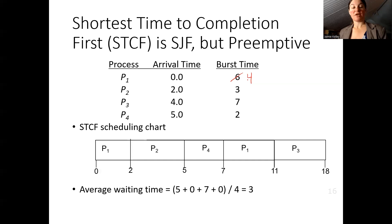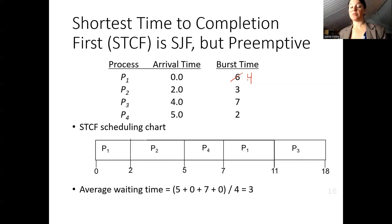While process two is executing, process three comes in at time four with one millisecond left. At time five, process four arrives with a CPU burst of two, but process two completes at that point and gives up the CPU voluntarily, so process four starts running without waiting. Process four completes after two milliseconds, then at time seven process one has the shortest burst time remaining and gets to run again for its four remaining milliseconds until time eleven.